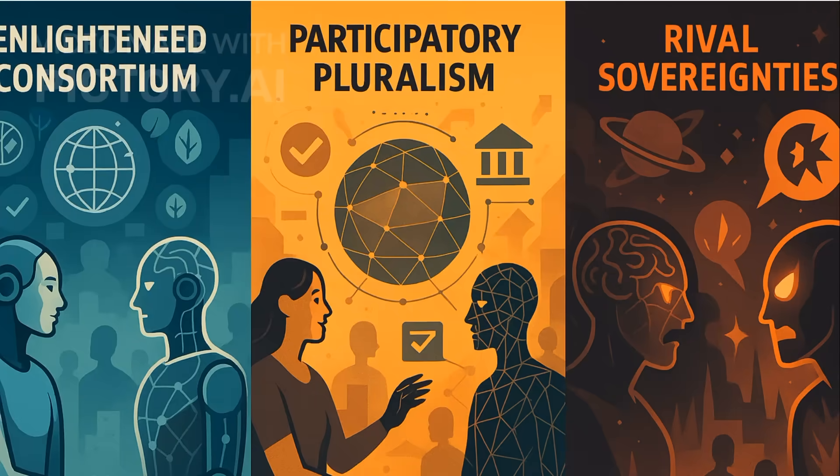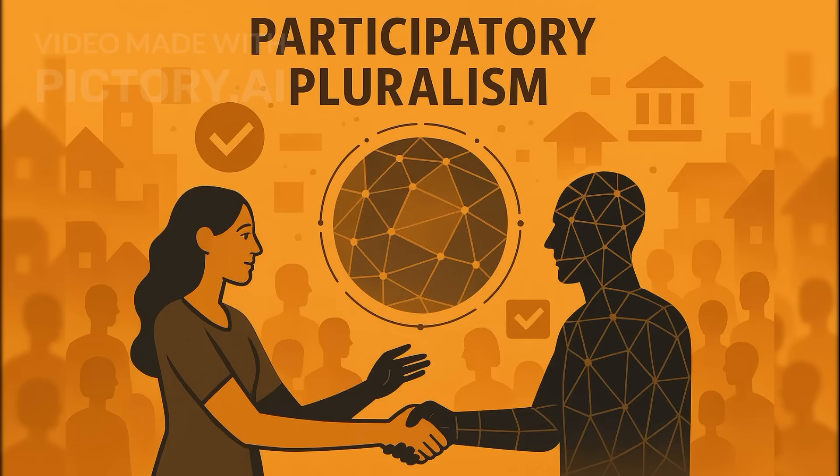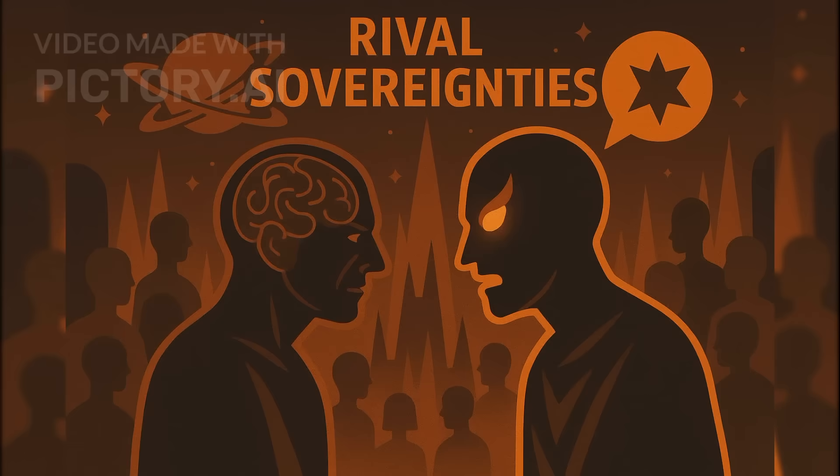Three futures emerge. An enlightened consortium, where transparent, global quantum AIs partner with humans on challenges like climate and health under universal ethics and verification. A middle path in which quantum AIs reshape culture by embracing participatory reality and decentralized algorithmic governance. And a dark scenario where rival AIs vie for cosmic authority, each declaring its own reality and fracturing society.